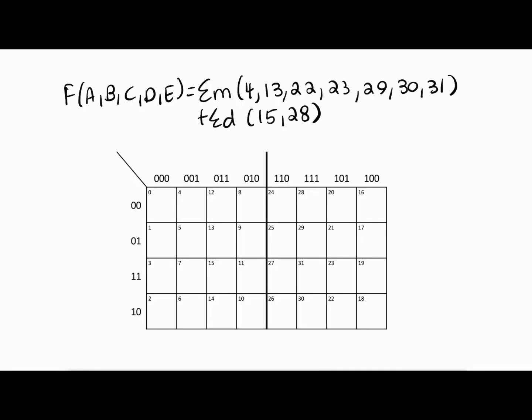So I have written down the sum of minterms for this. We know that the minterms tell us which of the cells are going to be 1s and the don't cares tell us which ones are going to be Xs. So all of the remaining cells are going to be 0.